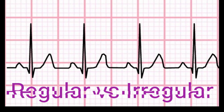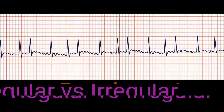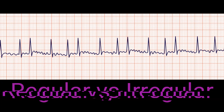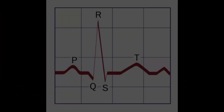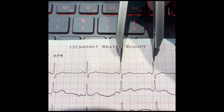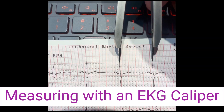This video will show the basic method of determining the regularity of an ECG or EKG rhythm. An EKG rhythm is considered regular if the time intervals between consecutive QRS complexes are consistent.